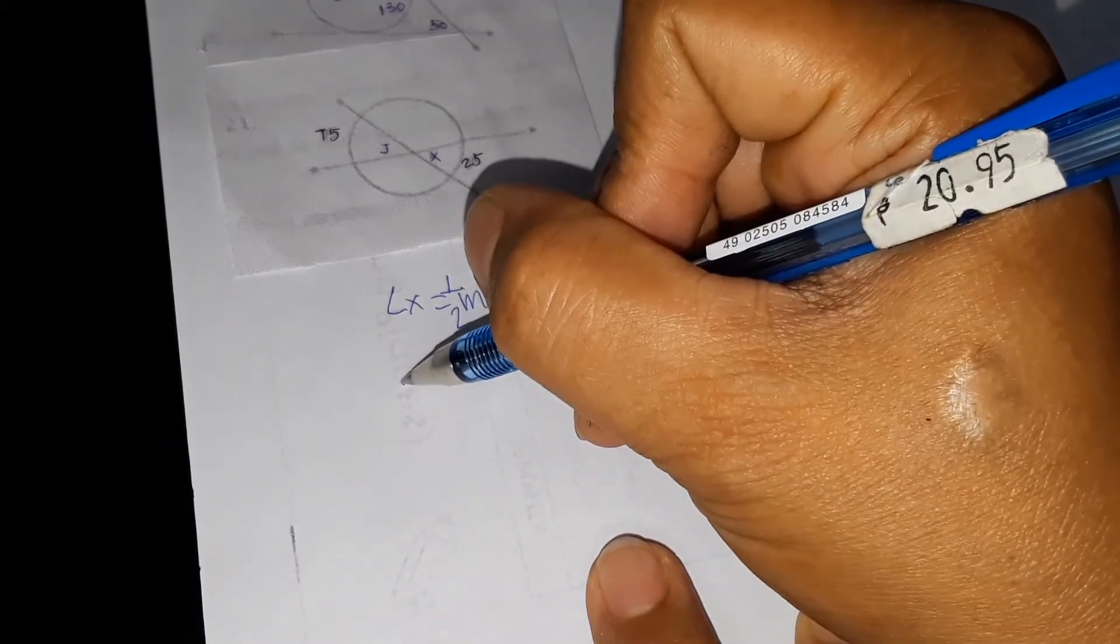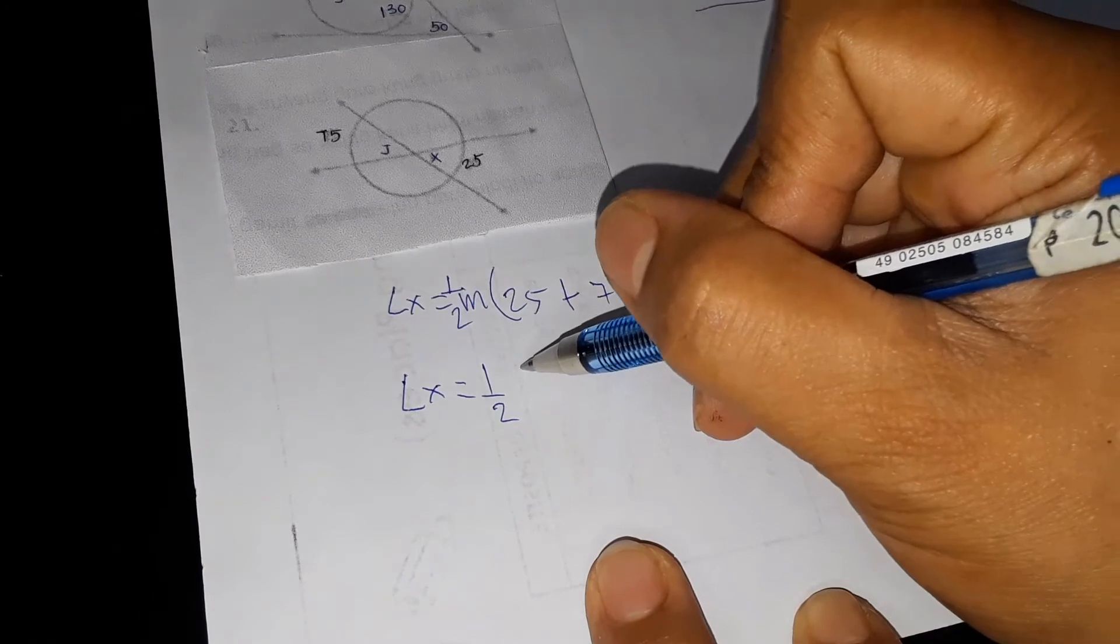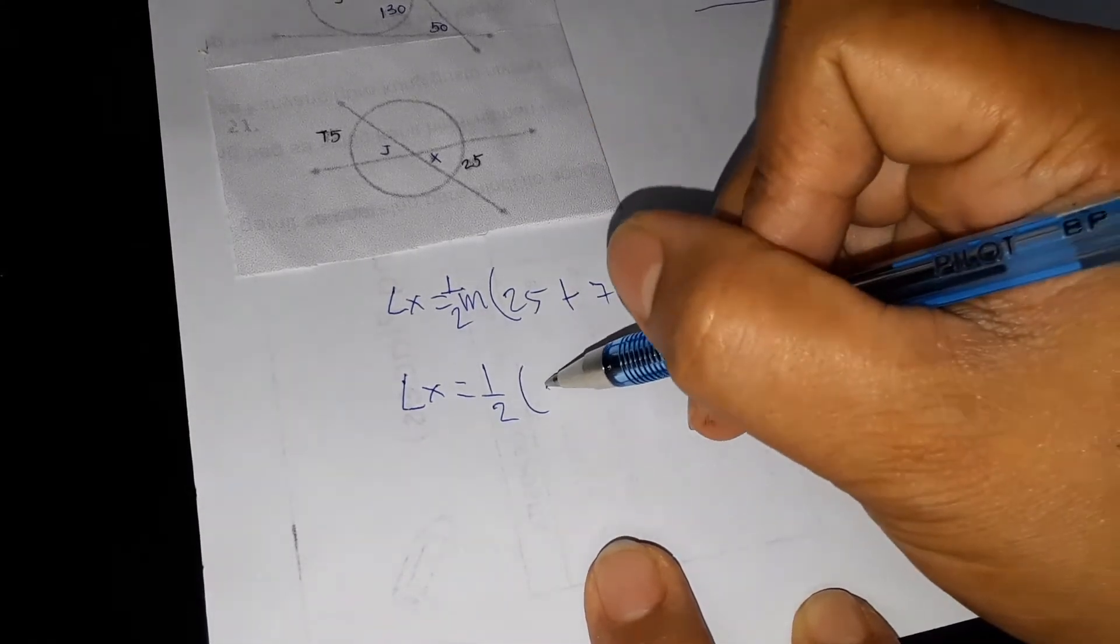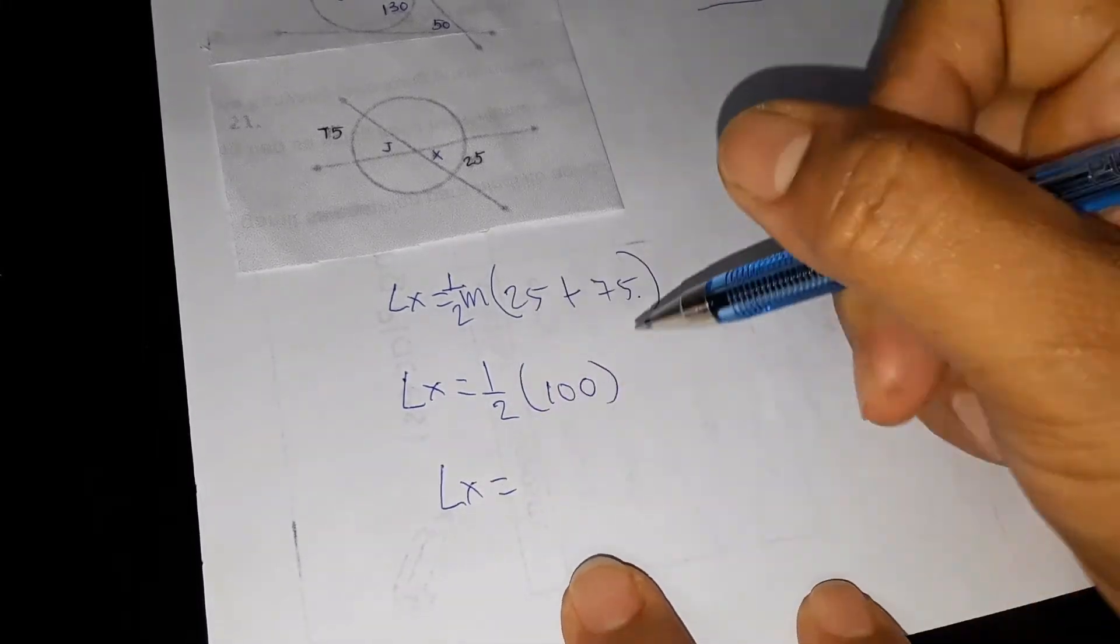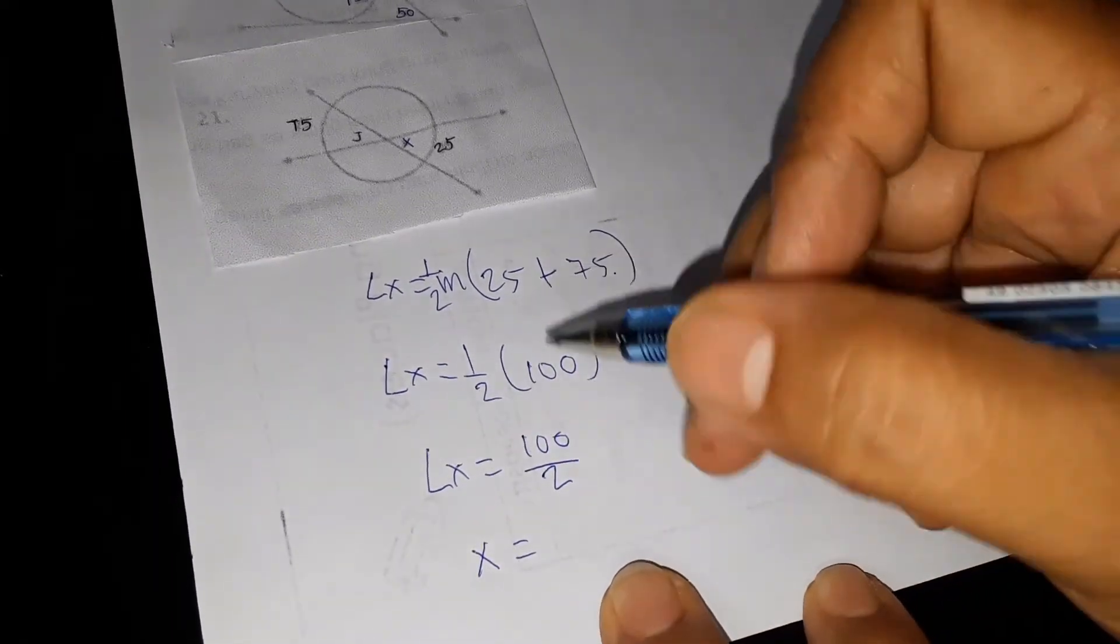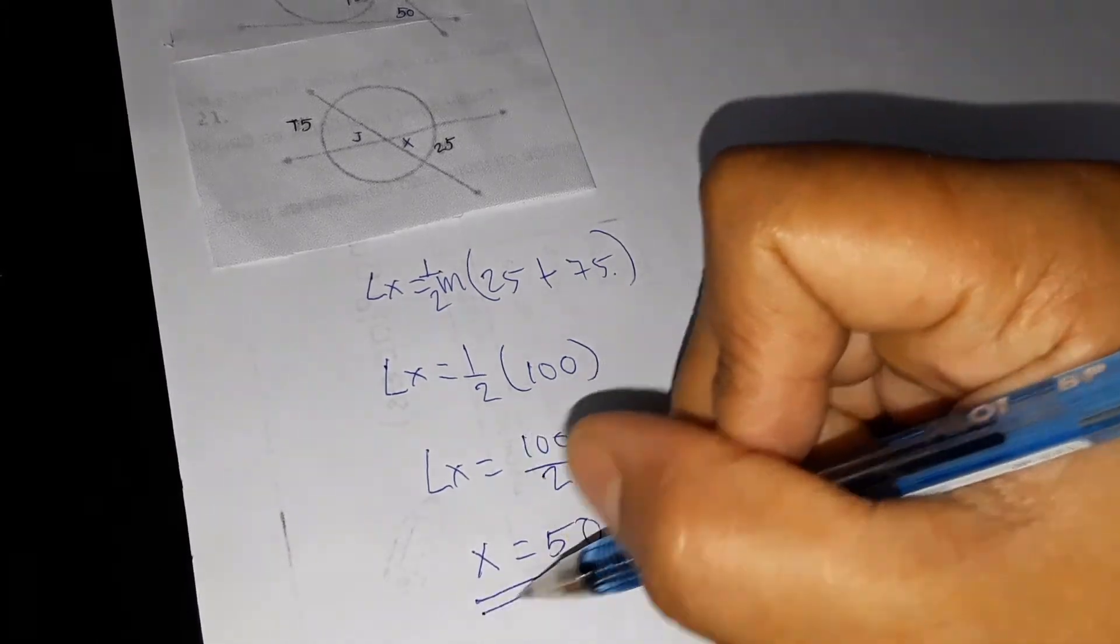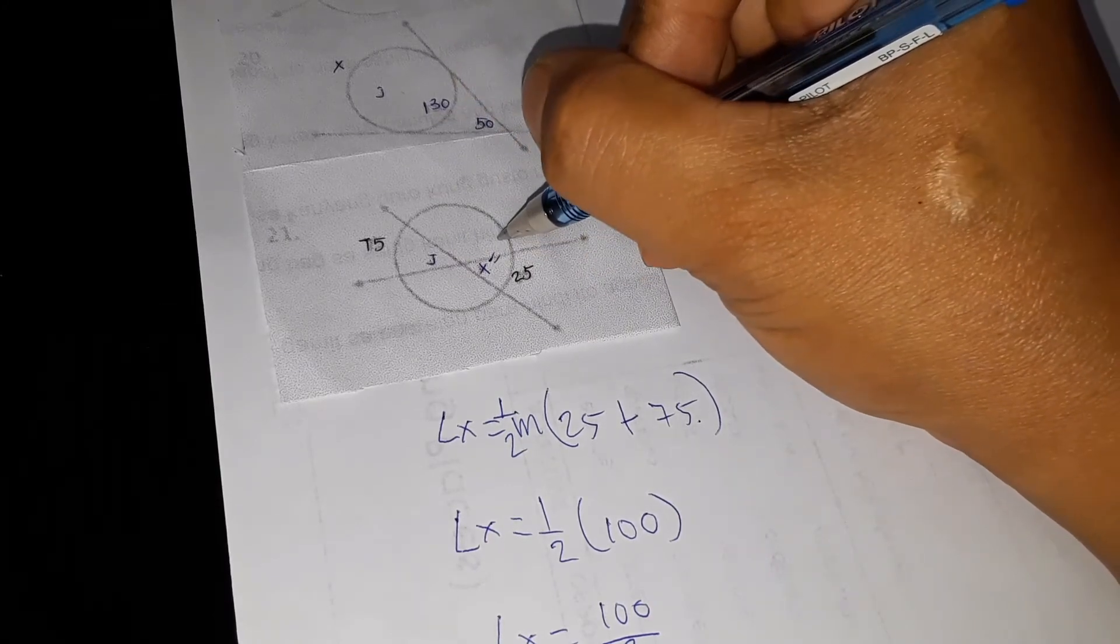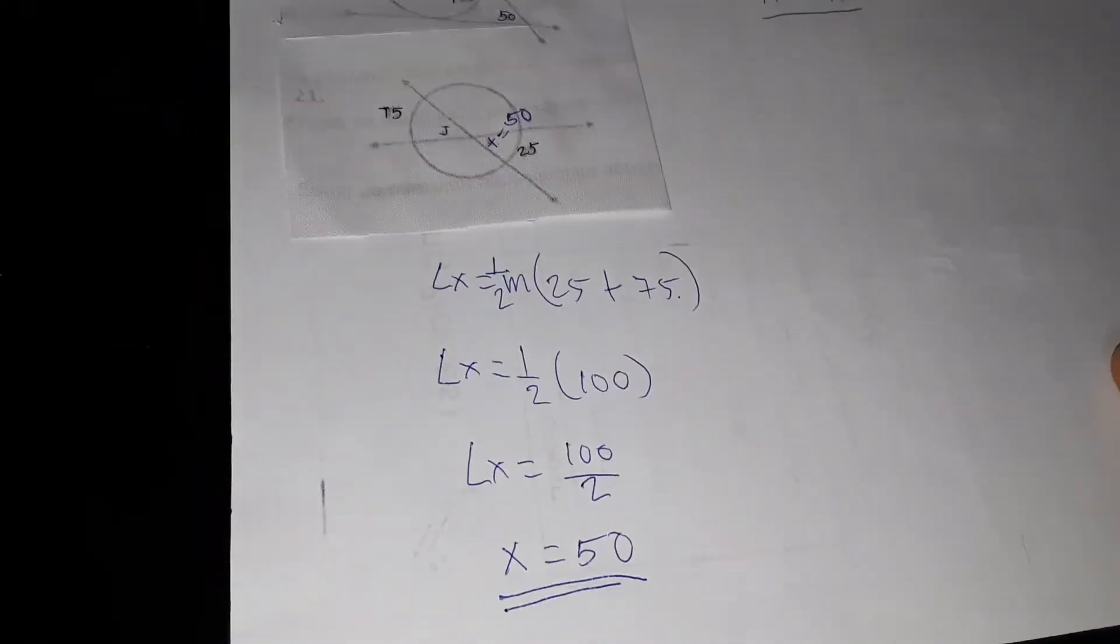We have 25 plus arc 75. Then angle X is equal to one half. 25 plus 75, we have 100. So angle X is equal to 100 over 2. So X now is equal to 100 divided by 2, we have 50. Therefore, our angle X and angle J here is equal to 50.